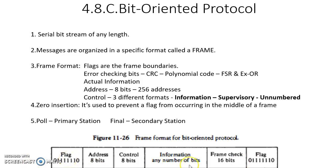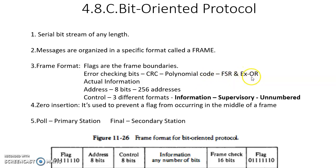The address is very important — it is an 8-bit address, so 256 different addresses are possible. There are three different formats of control possible, which we will look at later. Frame check bits are used to identify the presence of errors. These frame check bits are generated using CRC — Cyclic Redundancy Check — a polynomial code passed through a feedback shift register having many exclusive-OR gates. The information field can contain any number of bits.